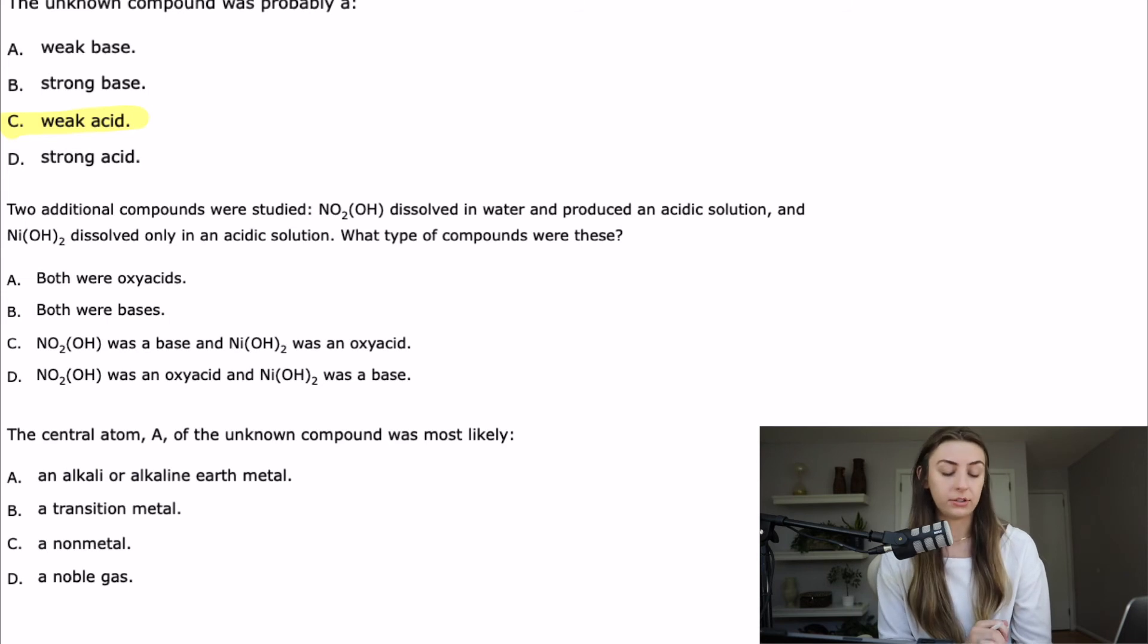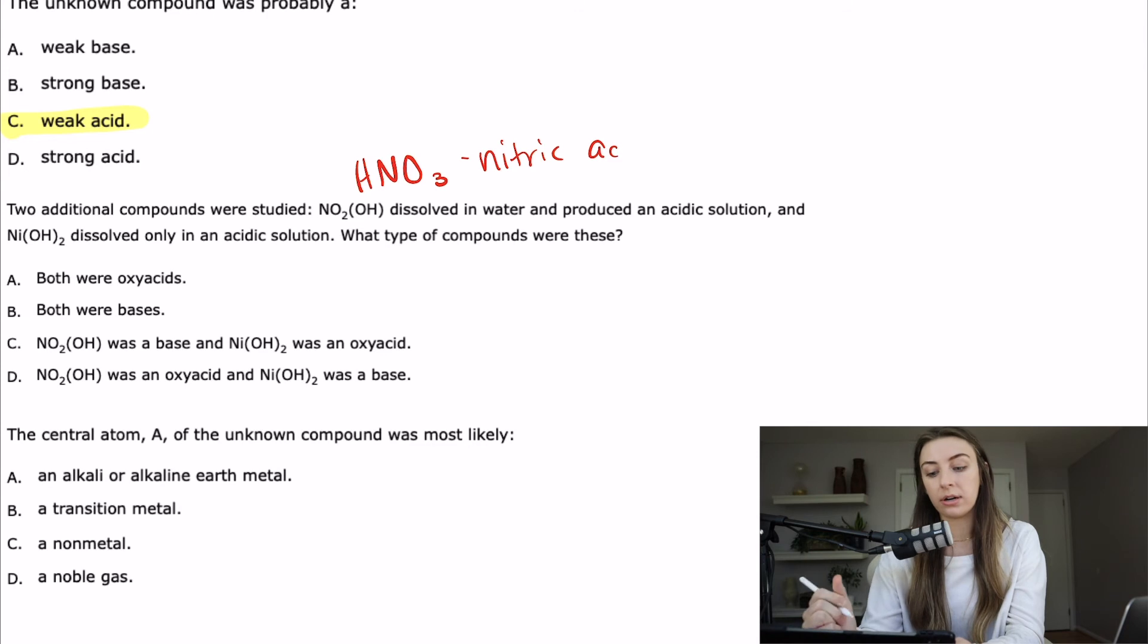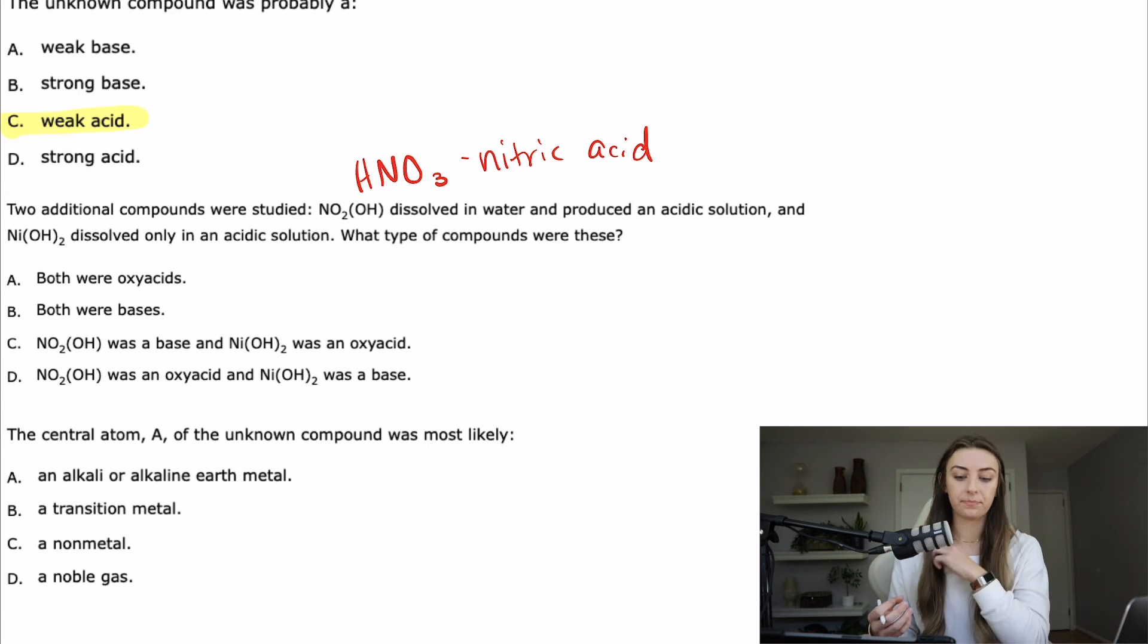The next question, number 12, says two additional compounds were studied. NO2(OH) dissolved in water and produced an acidic solution and Ni(OH)2 dissolved only in an acidic solution. What type of compounds were these? There's several ways to figure this question out. First off, if you notice this NO2(OH) is just a different way to write HNO3 which is nitric acid, then you already know that that one is an acid and so whether it's an oxy acid or not, it doesn't really matter. It's not a base, right? So it's an acid. You could also look at the central atom because we're told if it's a non-metal, which it is in this one, that the compound is an oxy acid. And if it's a metal, then it's probably a base.